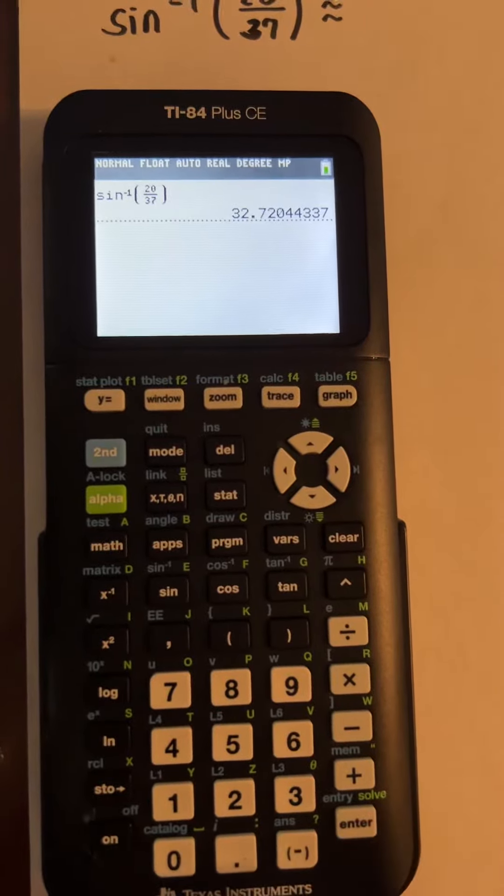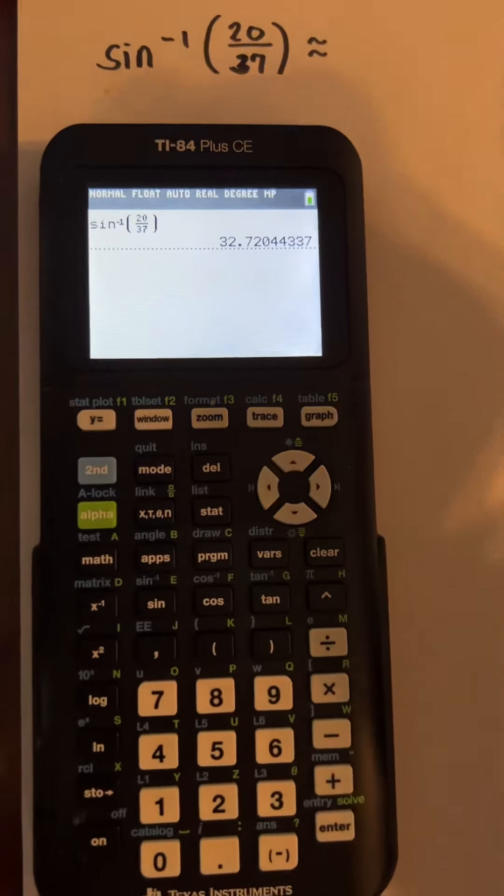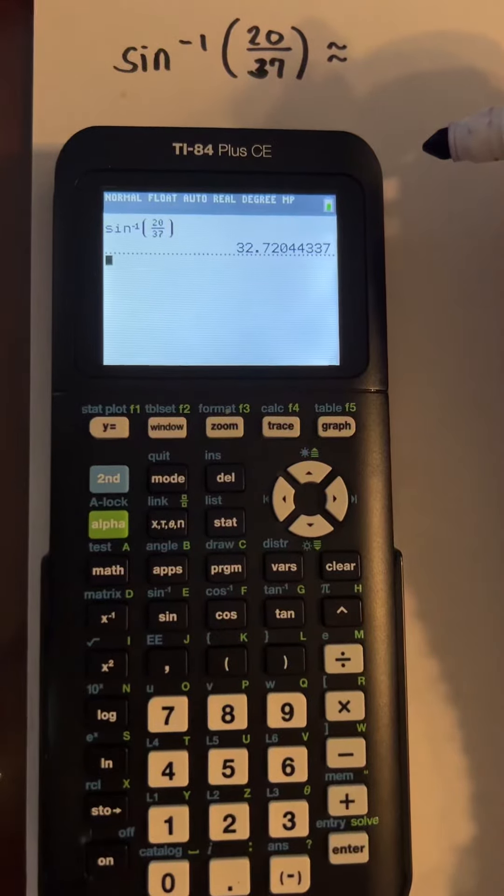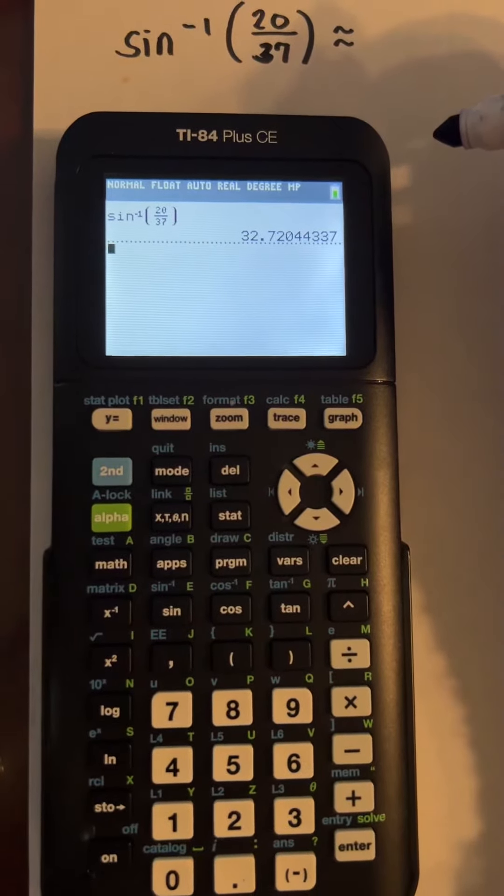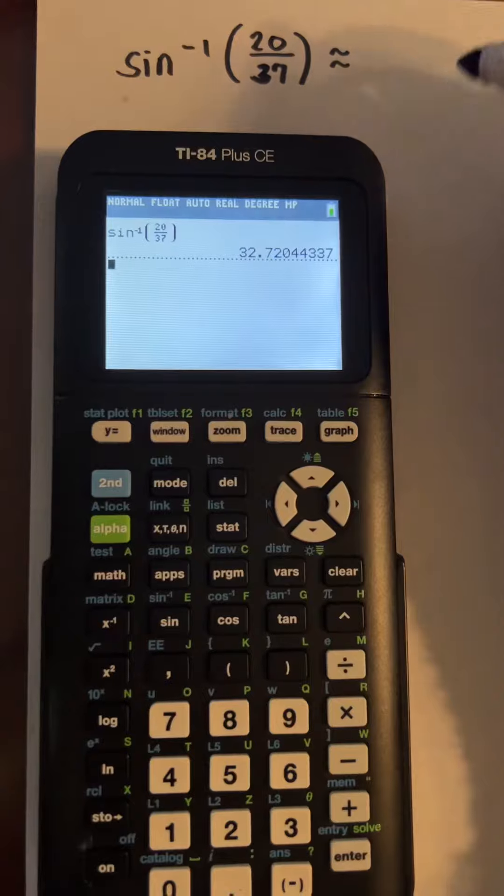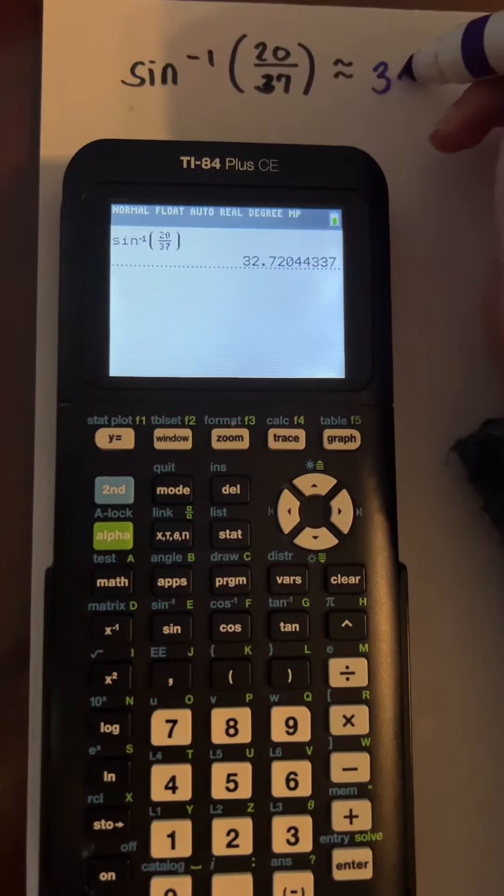Click enter. So sine inverse of 20 over 37 is approximately equal to 32.72 if we are going to round it to the nearest hundredth.